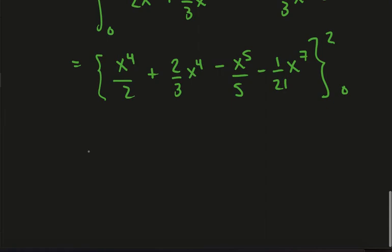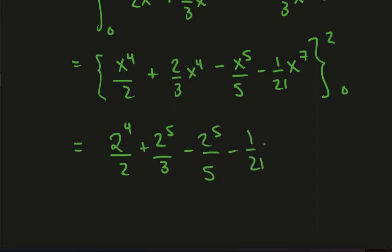Since we have a 0 here, we don't have to actually put that in because we'll just get a 0. So now I just need to evaluate 2 to the 4 over 2 plus 2 to the 5 over 3 minus 2 to the 5 over 5 minus 1 over 21 x to the 7.